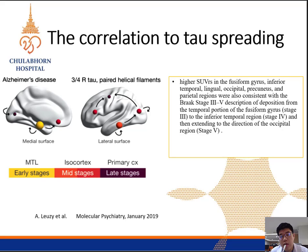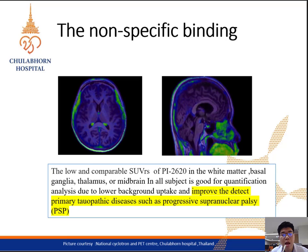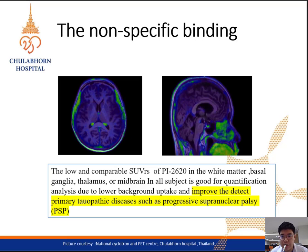Our outcomes also showed higher SUVR in regions compatible with Braak staging for tau spreading: deposition in the fusiform gyrus for Braak stage 3, then progressing to the inferior temporal gyrus in stage 4, and to the occipital in stage 5. Regarding non-specific binding, the subtle uptake seen in both visualization and quantitative analysis is a good indicator of the superior value of the second-generation tau tracer, improving detection of primary tauopathies such as progressive supranuclear palsy due to low uptake at the midbrain and basal ganglia.